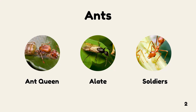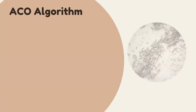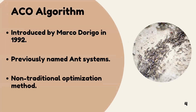Now let's go to the ant colony optimization algorithm. The ACO algorithm was founded by Italian scientist Marco Dorigo in the 1990s. The algorithm has been improved multiple times over the past few decades since it was first called the Ant System. It is one of the non-traditional optimization methods used to solve problems, similar to the particle swarm, genetic algorithms, or the bee colony algorithm.